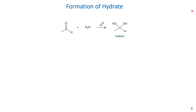Before we talk about acetal, we can talk about hydrate first. This has a very similar reaction. The reactant I use is the aldehyde — this is ethanal — but acetone or ketones also work. We need acid as a catalyst and water is the other reactant. The product is called a hydrate, and its structure is a geminal diol — two hydroxy groups on the same carbon.